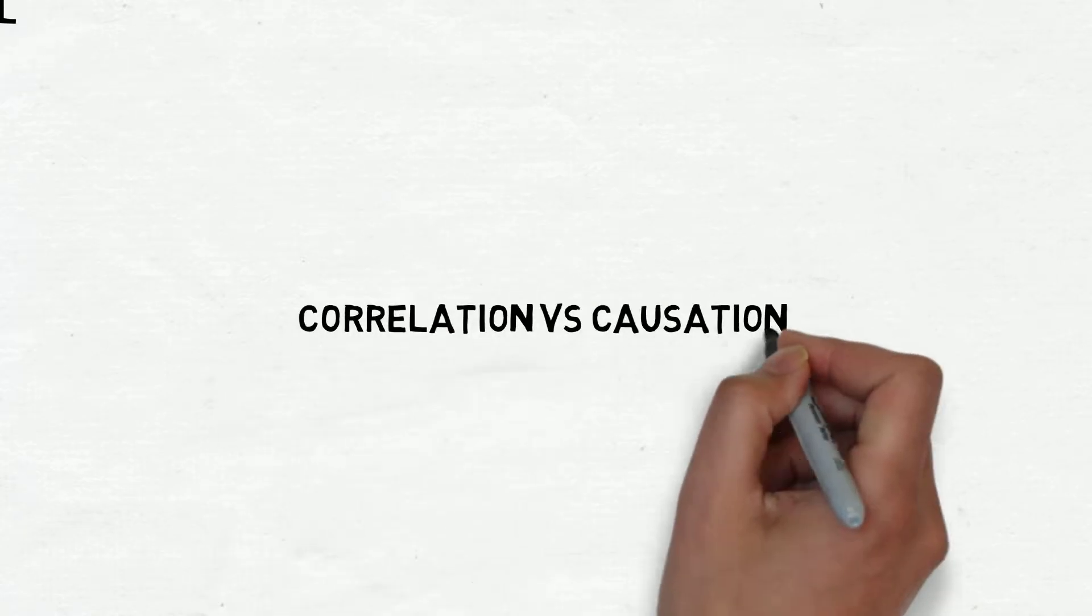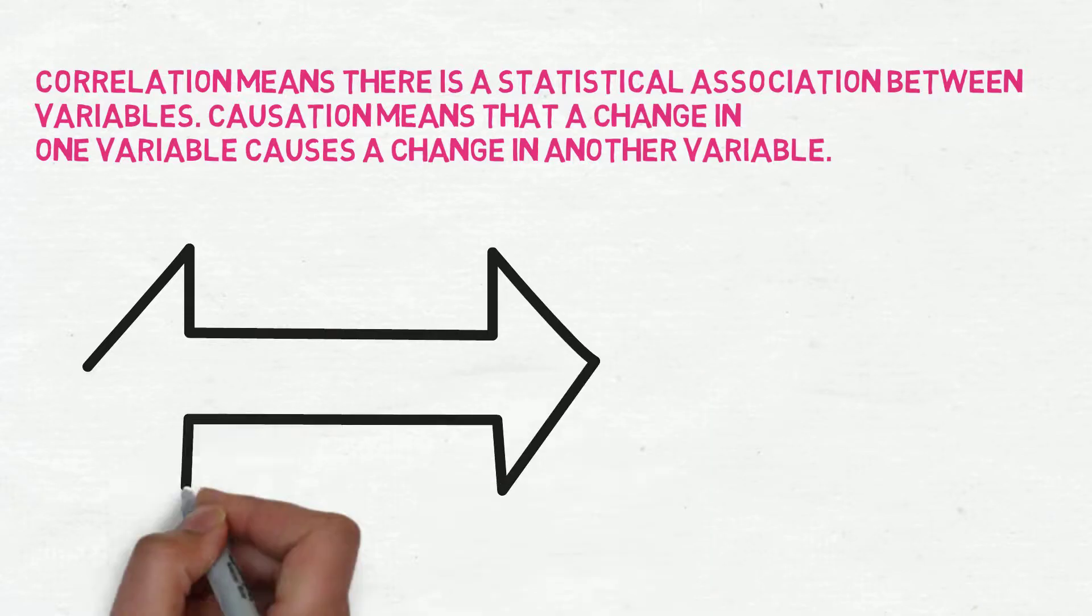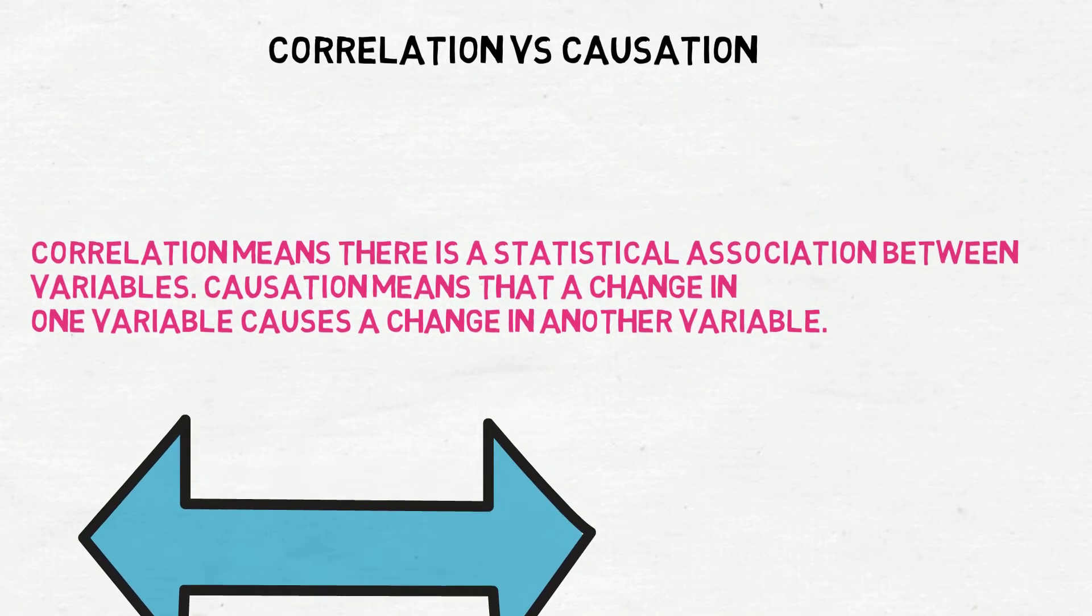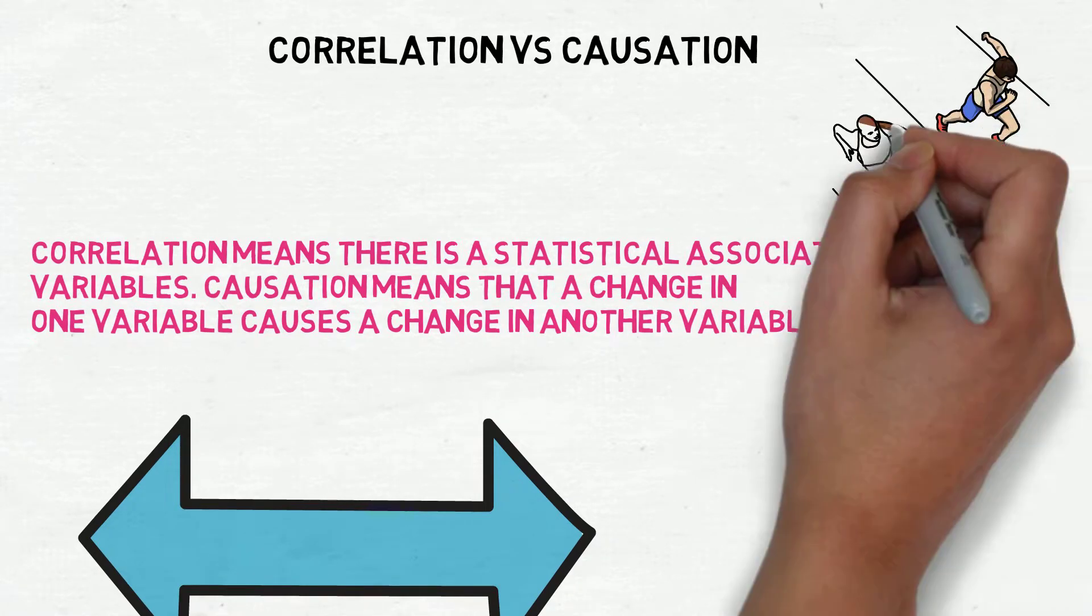Hey all, let's see about correlation versus causation. Correlation means there is a statistical association between variables, whereas causation means that a change in one variable causes a change in another variable. In research, you might have come across...